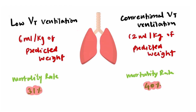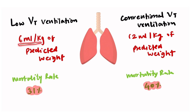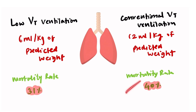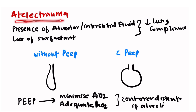Since ARDS predominantly involves the dependent parts of the lung while the rest remains normal, ventilating the affected area causes the normal area to overdistend, resulting in volutrauma. A study comparing low tidal volume (6 ml/kg predicted body weight) versus conventional tidal volume (12 ml/kg predicted body weight) showed that mortality rate was lower in the low tidal volume group.